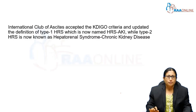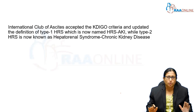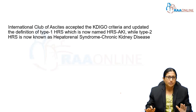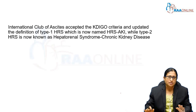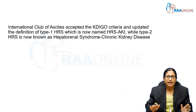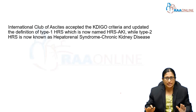The International Club of Ascites has accepted the KDIGO criteria for acute kidney injury and has updated the definition. Type 1 HRS is now called HRS-AKI, and Type 2 HRS is now called Hepatorenal Syndrome CKD.